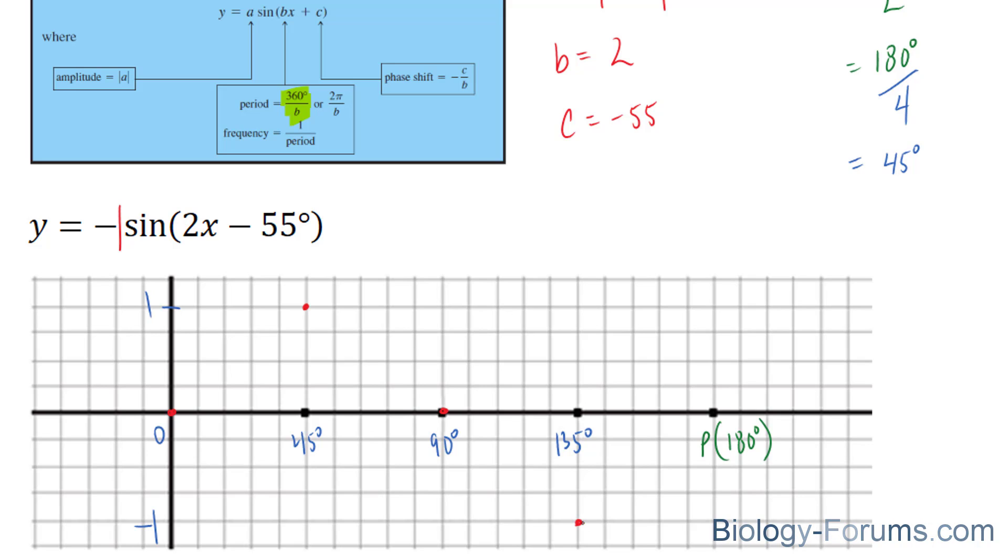All the way back to negative 1, and back to 180. And if we connect these points, we get a sine curve that looks like this. Two very important features have not been applied to this graph yet. If you recall, your a value was negative 1.